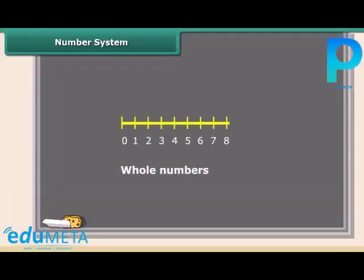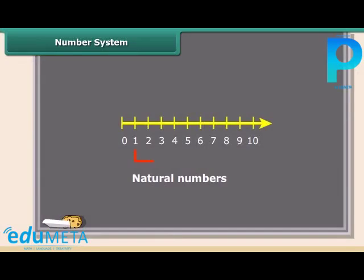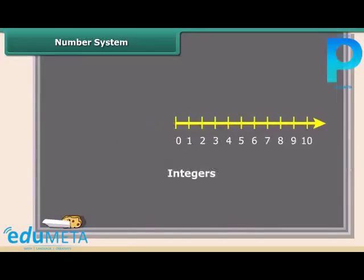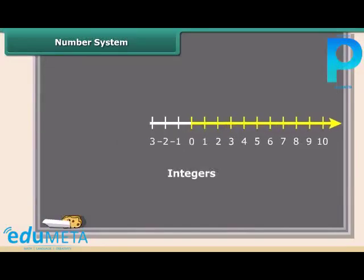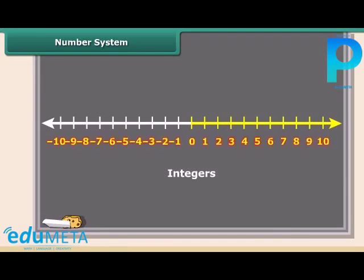Whole numbers are simply the numbers 0, 1, 2, 3, 4, 5 and so on. There are no fractions. Natural numbers are the positive whole numbers except 0. Integers are like whole numbers but they also include negative numbers. So integers can be positive, negative and 0.